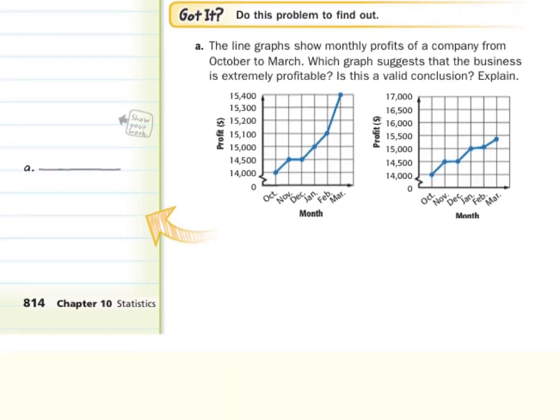So as we move on to our got it questions. The line graphs show monthly profits of a company from October to March. Which graph suggests that the business is extremely profitable? And is this a valid conclusion? Explain. Well our first graph looks like we have a huge spike in profits. While our second graph looks like they're increasing but they're just kind of piddly pooling around.